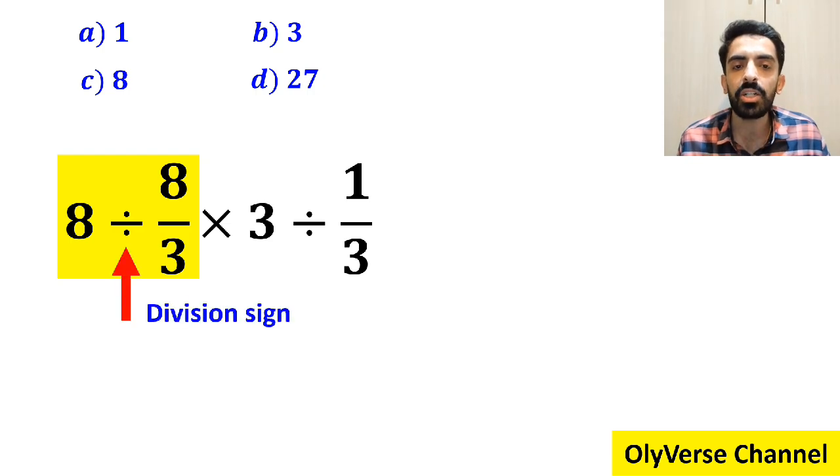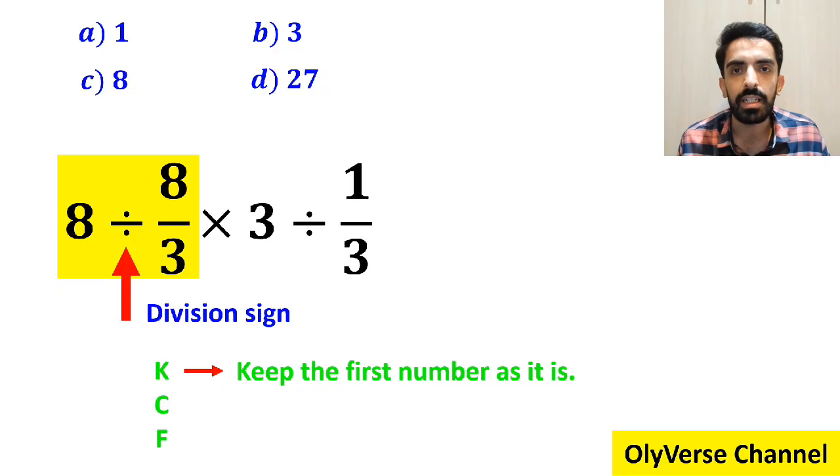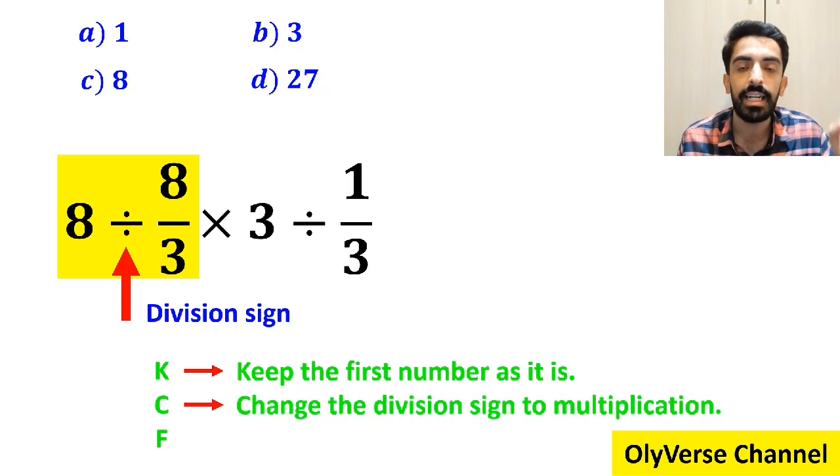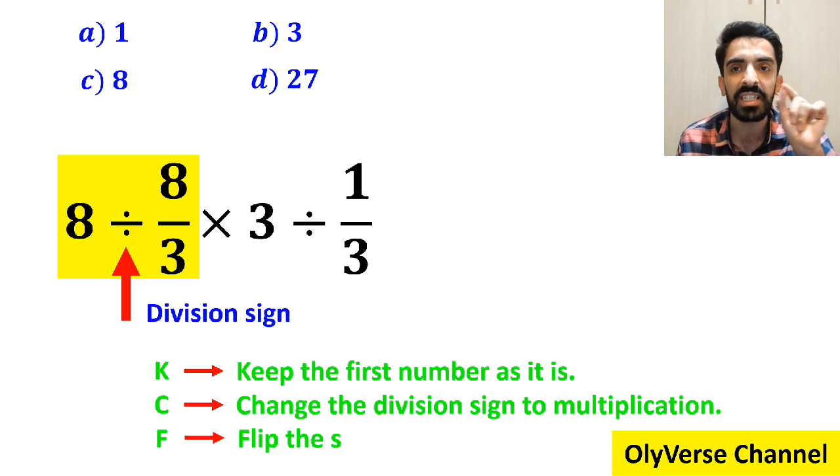Alright, whenever we come across a division sign between two terms, the best thing to do is to apply the KCF rule. In this rule, K stands for keep the first number as it is, C stands for change the division sign to multiplication, and F stands for flip the second fraction.